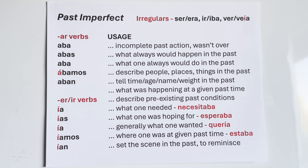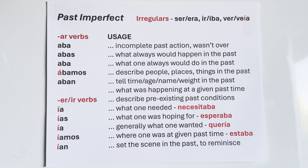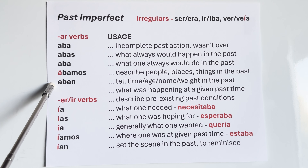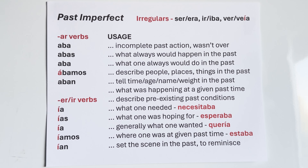Last usage listed: where one was at a given past time — estaba. I was in the house — estaba en la casa. I was out back helping dad — estaba atrás, ayudando a papá. We were downtown — estábamos en el centro. Mom was at work — mamá estaba en el trabajo. The girls were at the park — las chicas estaban en el parque. My dad was at his friend's house — mi papá estaba en la casa de su amigo.